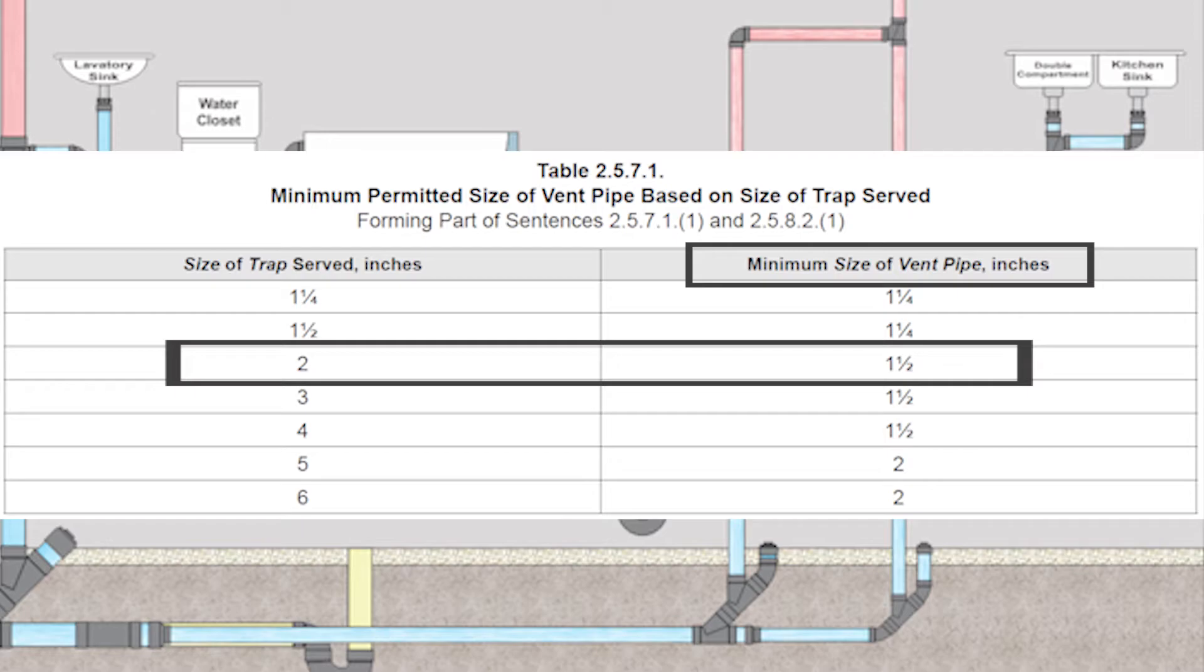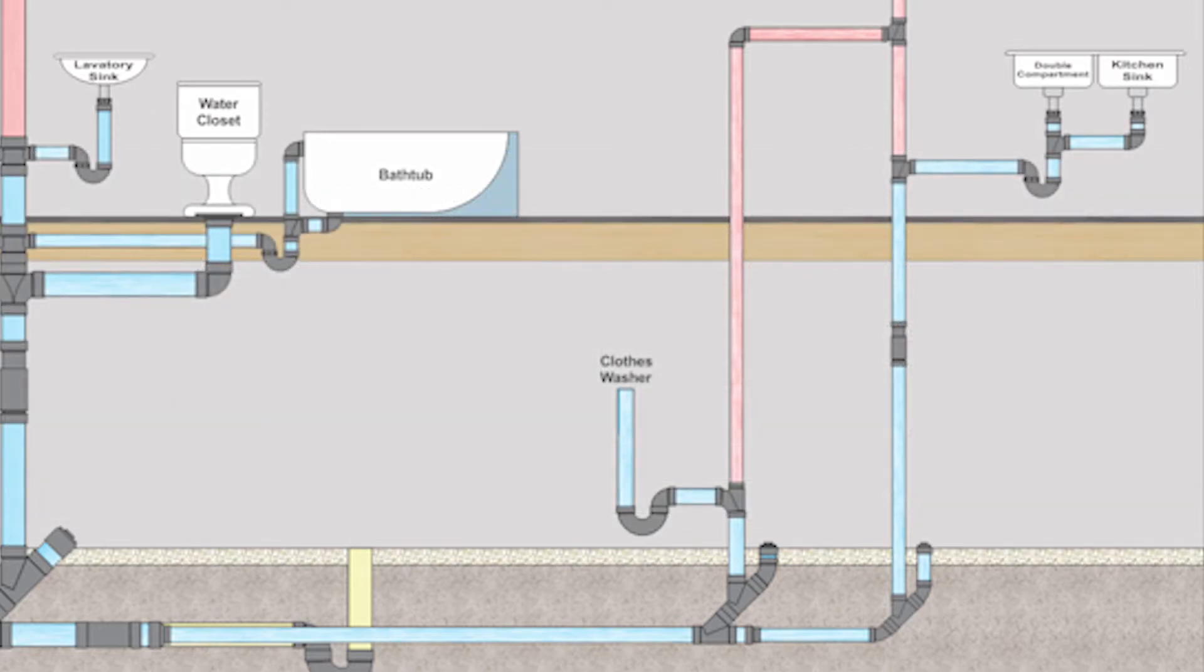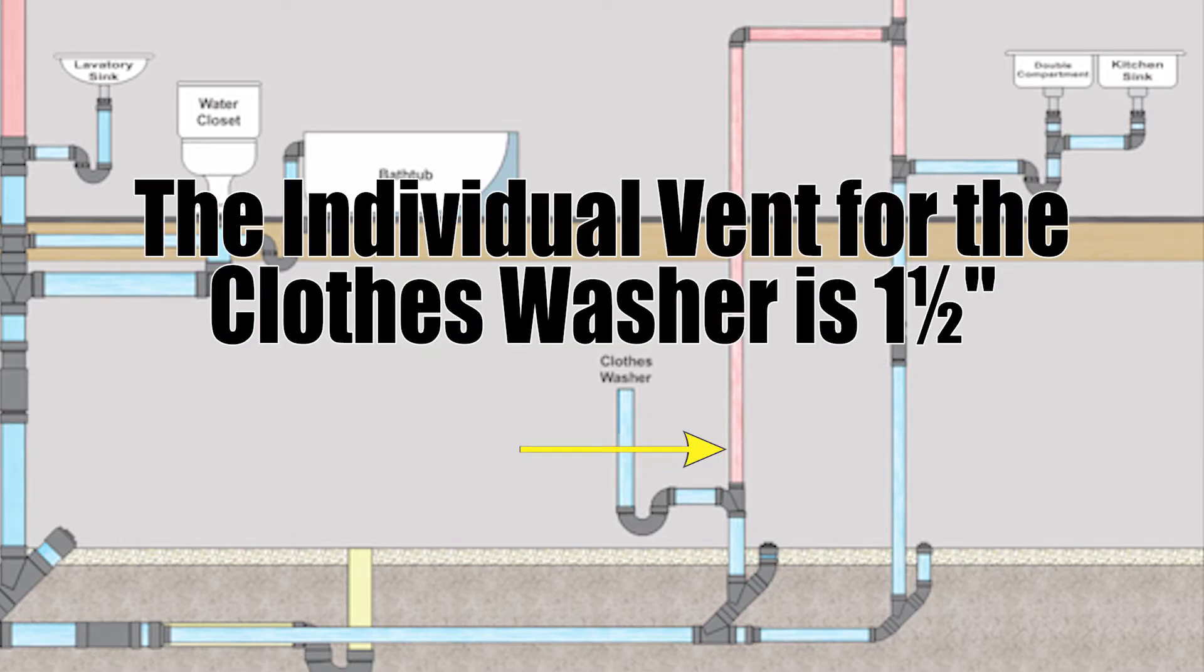Now that clause about sizing individual vents said something about not taking length into consideration. For most vents you actually have to measure the vent in meters and then apply that to a table. But for individual vents and for dual vents you don't need to measure it. So we don't have a developed length for it. We don't care. That could be a hundred meters long. It could be five meters long. It doesn't matter. It's inch and a half. It's done.